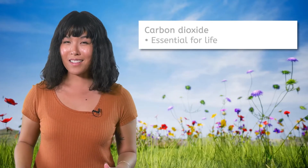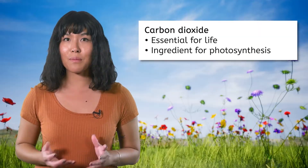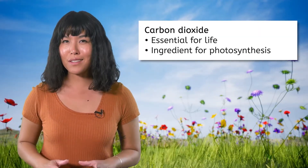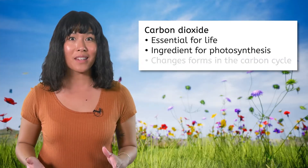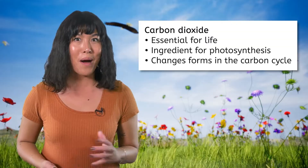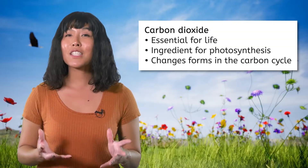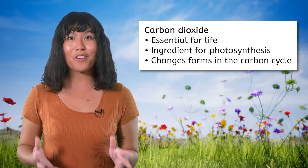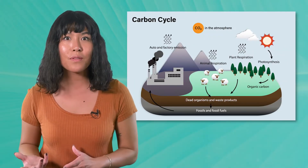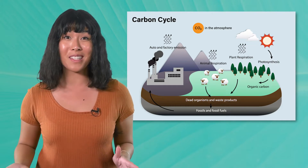Carbon dioxide is essential for life. It's one of the main ingredients that plants use to perform photosynthesis. And, just like the water cycle, carbon can change forms, cycling through the atmosphere, biosphere, geosphere, and hydrosphere in a special cycle called the carbon cycle. Let's explore the link between the atmosphere and the biosphere as we dive deeper into the carbon cycle.